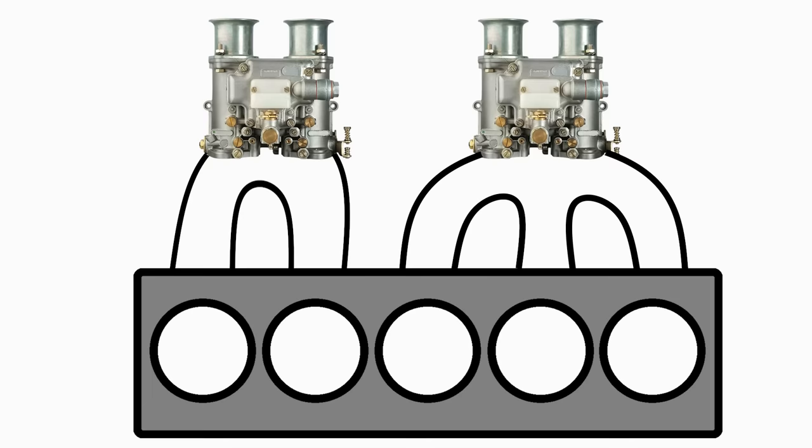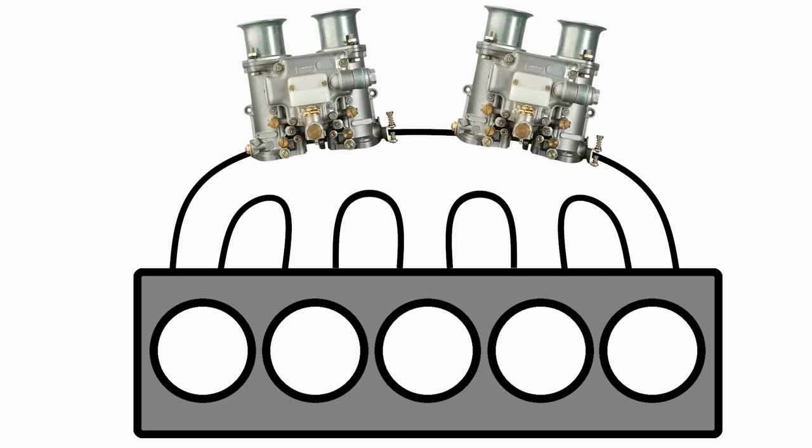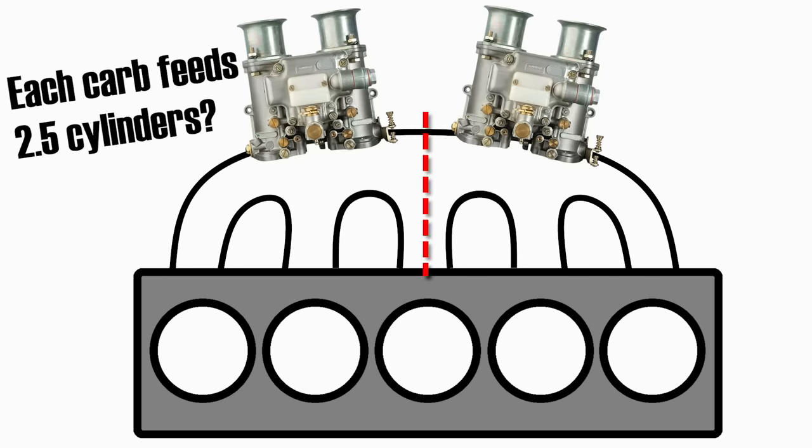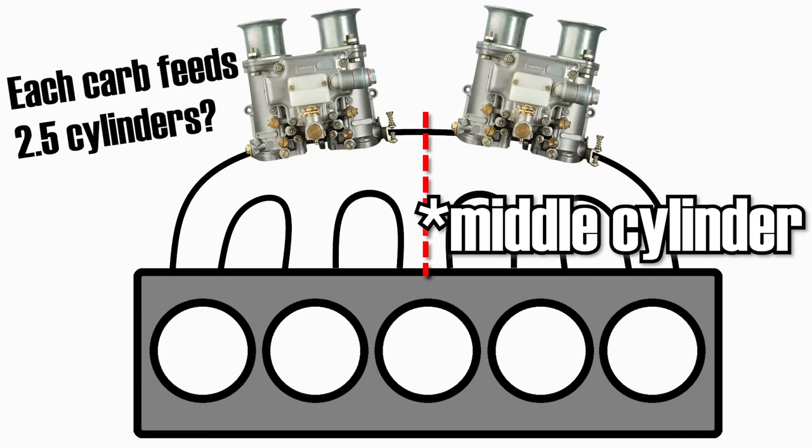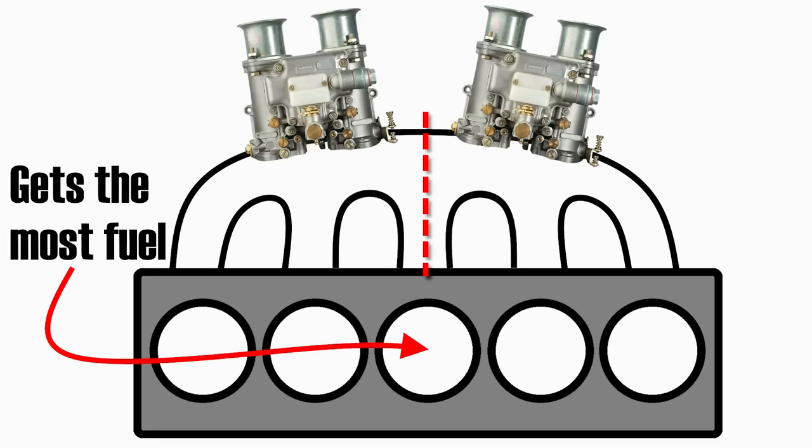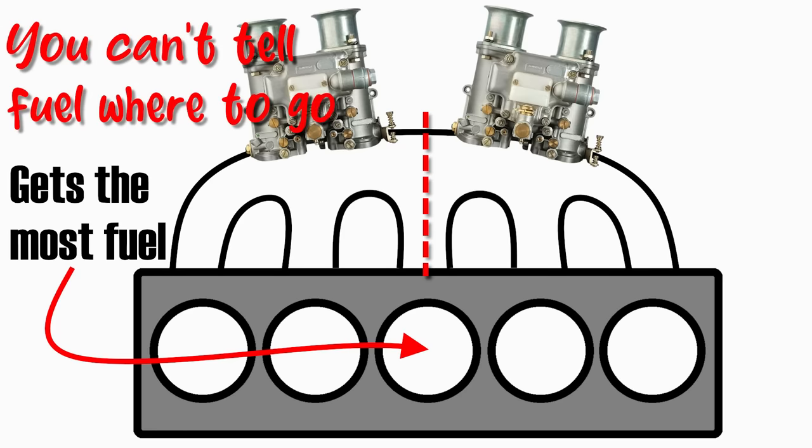We could try distributing the two carbs on a single manifold so that each carb somehow hopefully feeds two and a half cylinders. Well, this is no different from a single carburetor, single manifold setup. And in this scenario, the middle carburetor gets the most fuel because it has the shortest runner and both carburetors feed it nearly directly. As long as we have a single intake manifold for all the cylinders, the number of carburetors doesn't matter because we can't tell a particular amount of fuel from a particular carburetor to go into a particular cylinder.